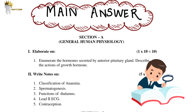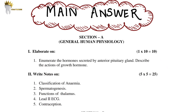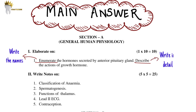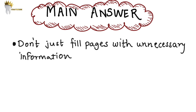After the brief introduction, let's come to the main answer. It's very important to read the question very carefully. For example: 'Enumerate the hormones secreted by the anterior pituitary gland. Describe the action of growth hormone.' They are not asking you to write in detail about all of the hormones — just write the names of all of them and then write in detail about growth hormone only. Always read exactly what is asked and stay on topic. If you write something completely wrong, you might lose marks.